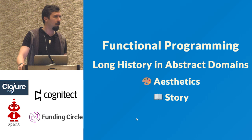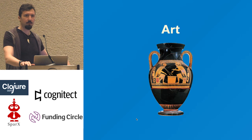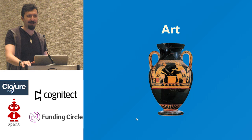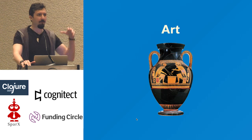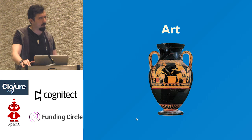Functional programming also has a very long history in abstract domains — domains dealing with aesthetics, domains dealing with story. Before I dive into that background and the long history of functional programming in these areas, I want to step back and make sure that we're all on the same page about art, which is easy to do, right? I acknowledge the fact that we're all coming into this room with our own perspectives and our own experiences with art.